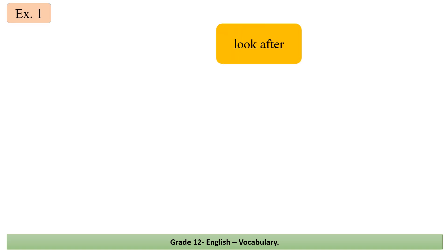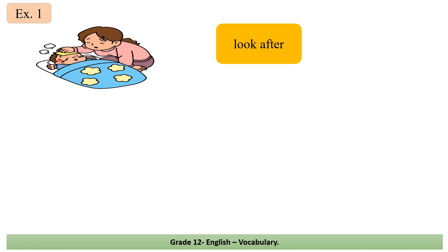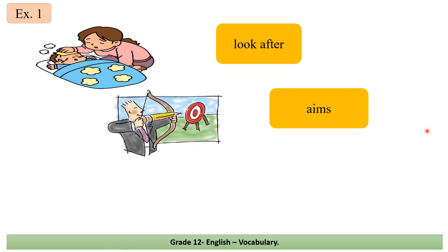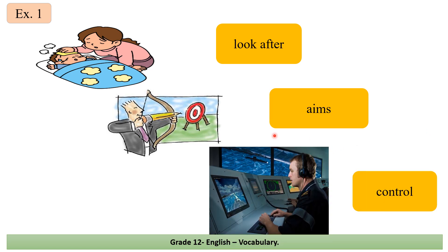Exercise one. Let's have a look at the vocabulary. 'Look after' means to take care of somebody, to be in charge of something or somebody. 'Aims' means what do you want to do, what do you want to achieve. 'Control' means to be able to handle, to operate, to rule something — he's ruling a ship here.